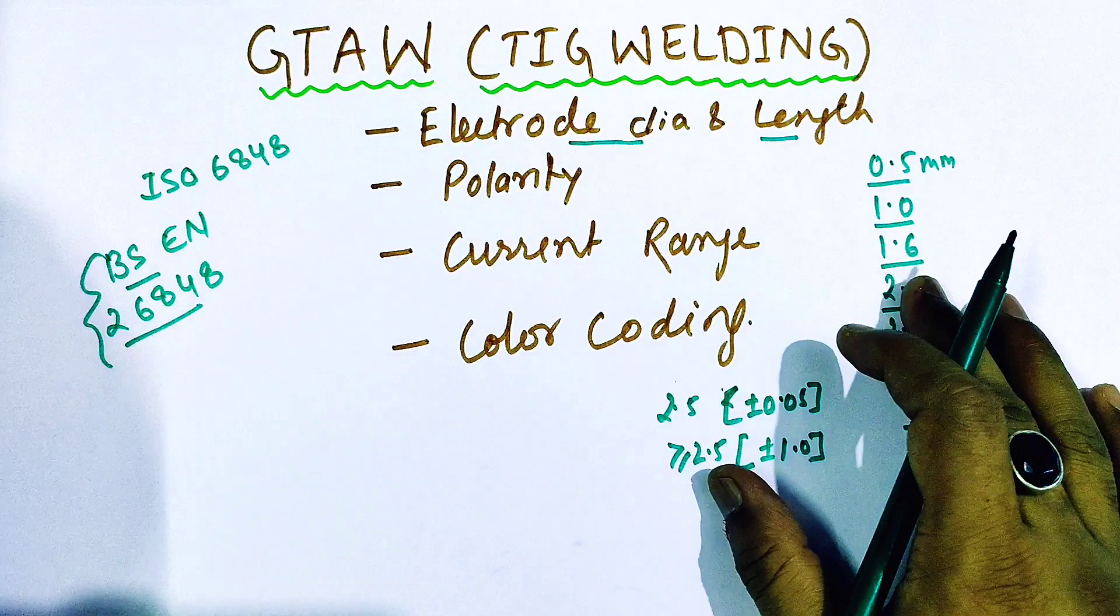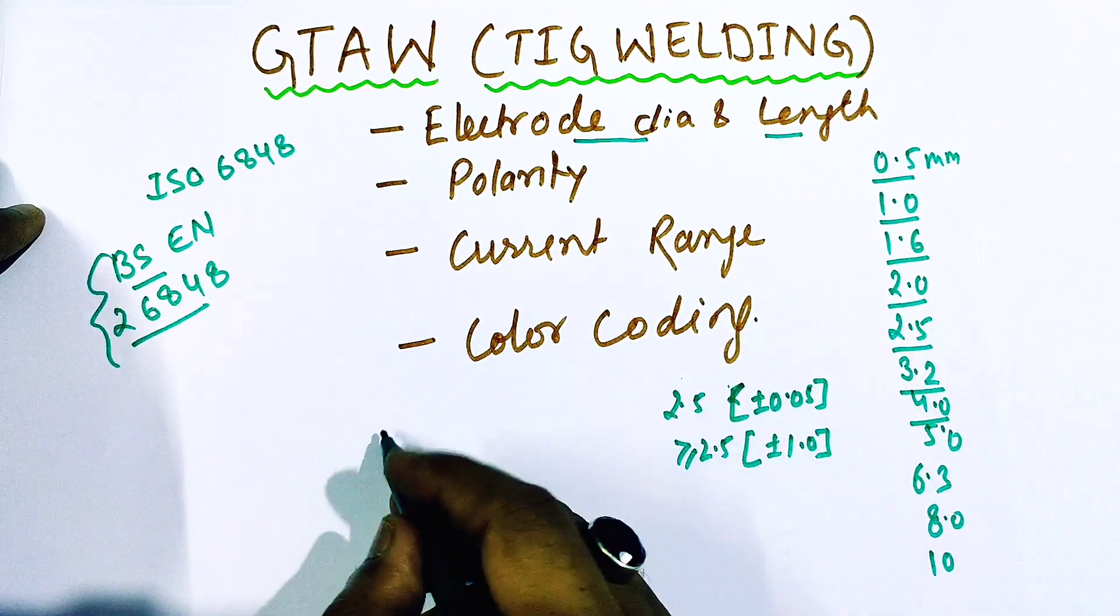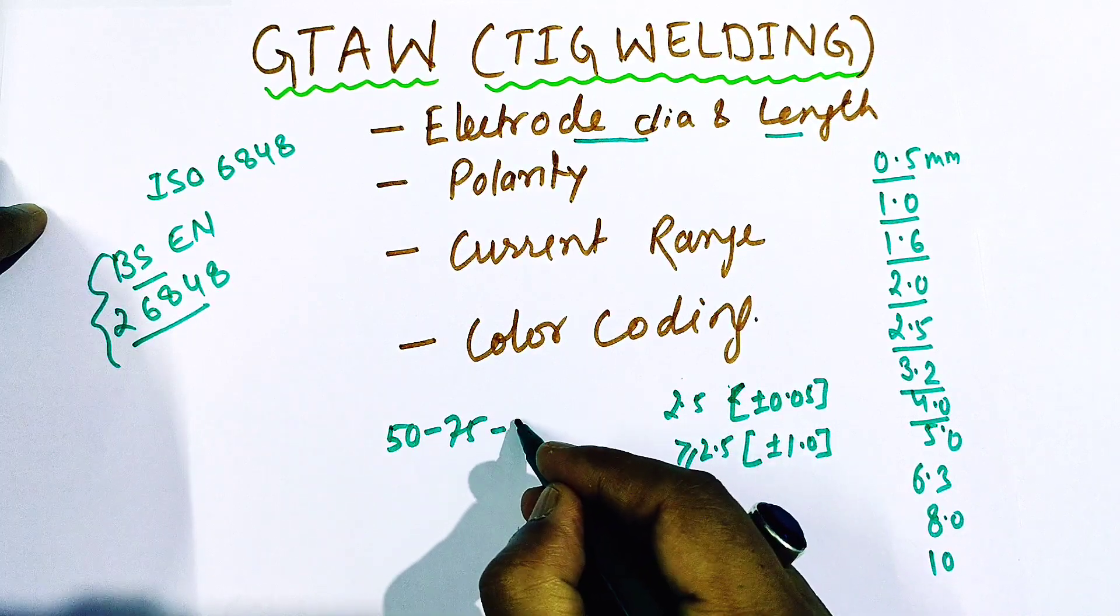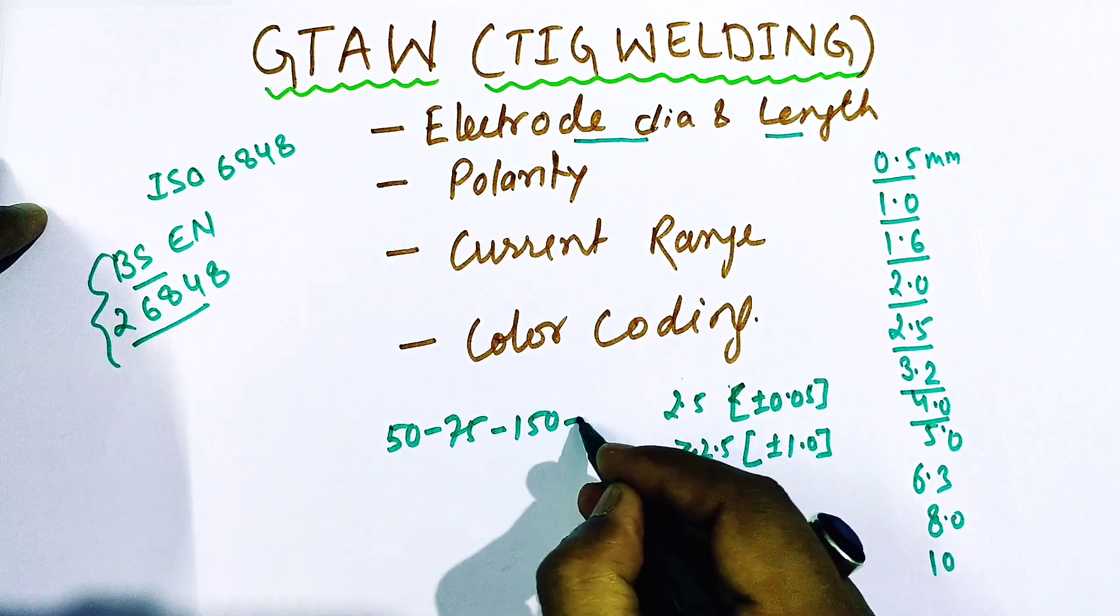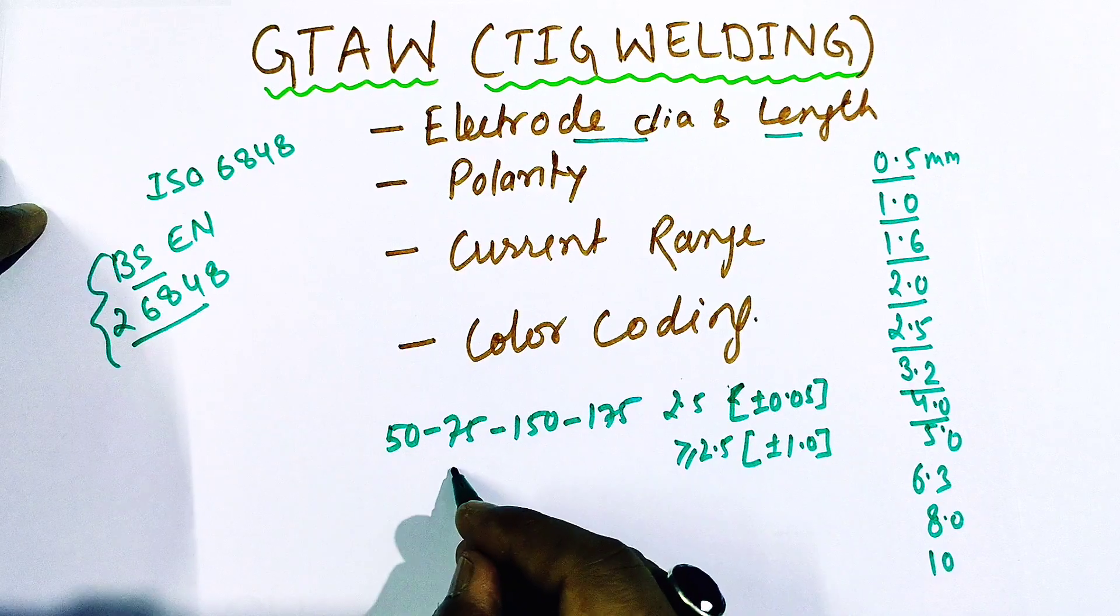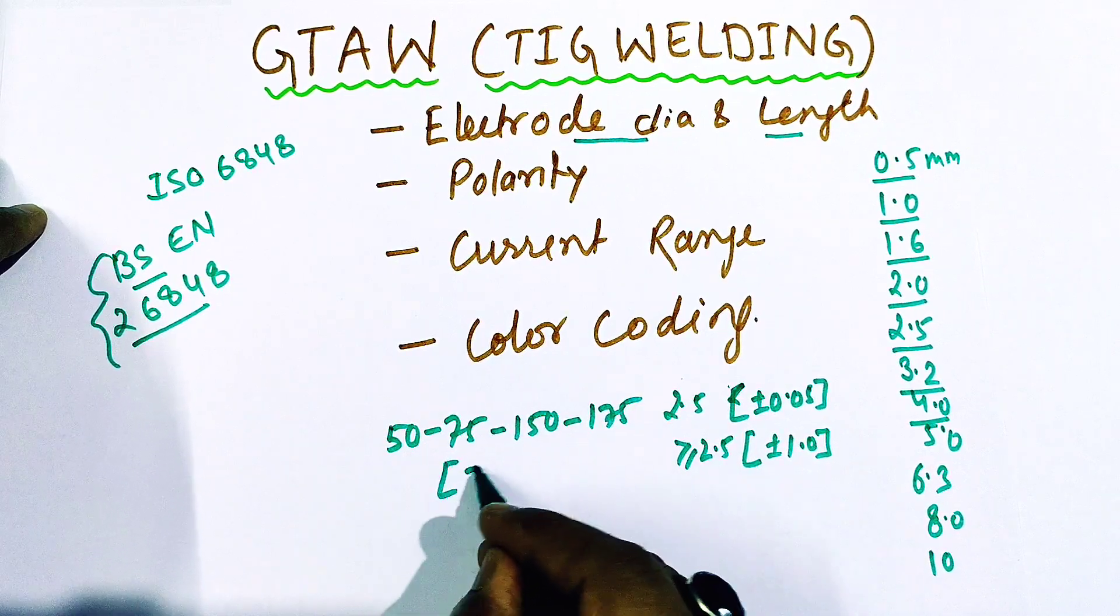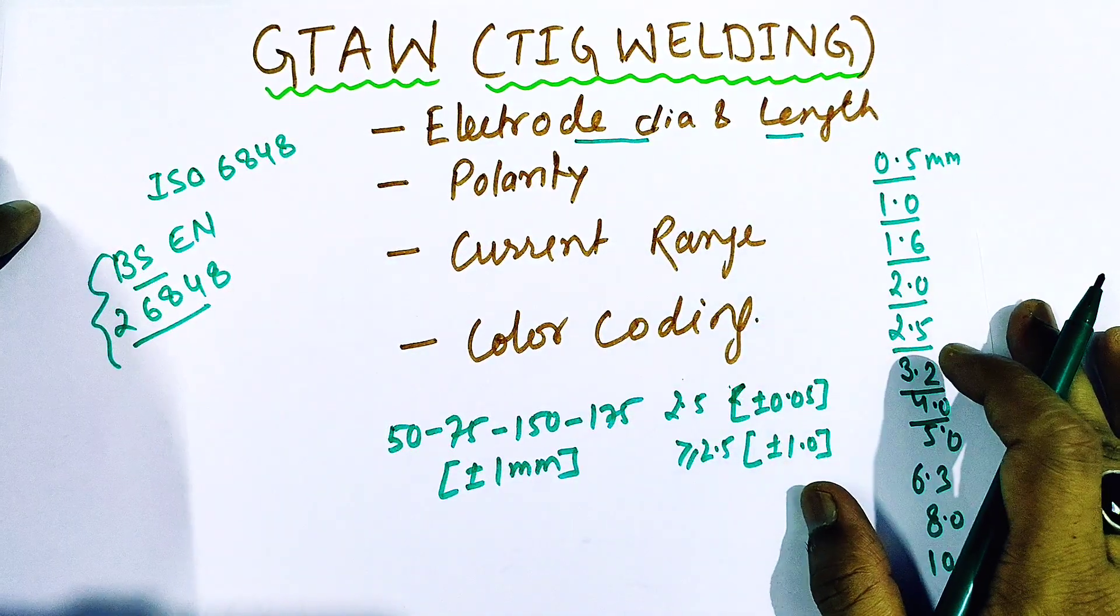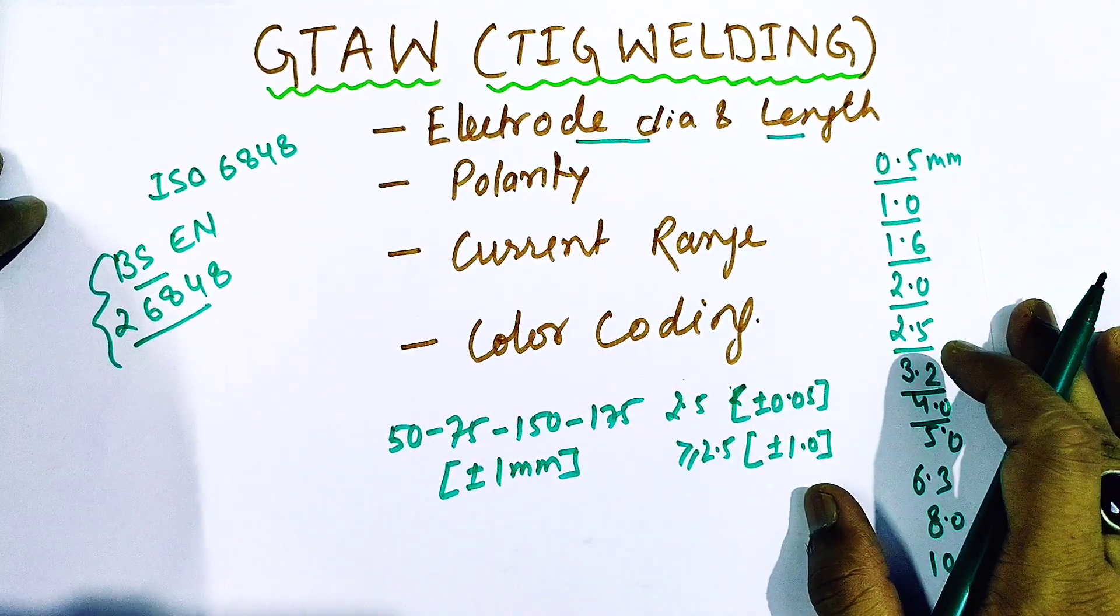Now we'll understand the length. The lengths which have been given in the code are 50, 75, 150, and 175, and the tolerance is plus minus 1 mm. So this is about the diameter and length. Now we'll talk about the polarity.